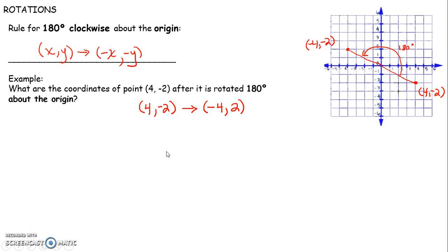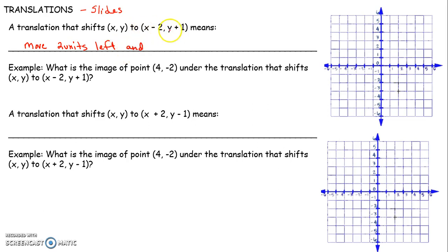I think I can do translations right on this same video. A translation that shifts x, y to x minus 2, y plus 1 — let's talk about what that means. Translations are just slides. x minus 2 means move 2 units left, and y plus 1 means 1 unit up.